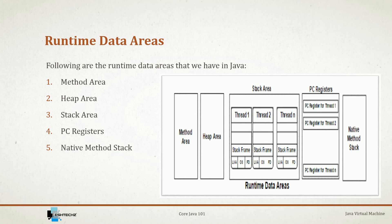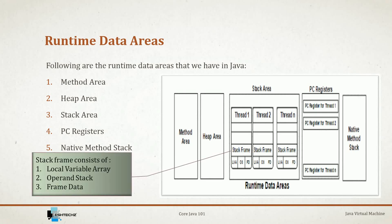A stack frame is divided into three parts. The first is the local variable array, which stores all local variables and their values in array format. Next is the operand stack, which acts as a runtime workspace for any intermediate operations a thread needs to perform. The third is frame data, which includes data to support constant pool resolution, normal method return, and exception dispatch. Once the thread completes, all its stacks get destroyed.